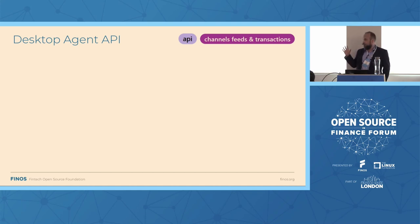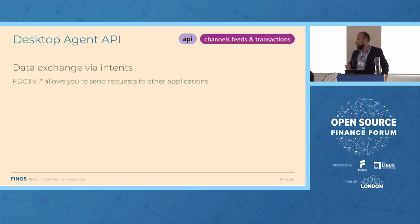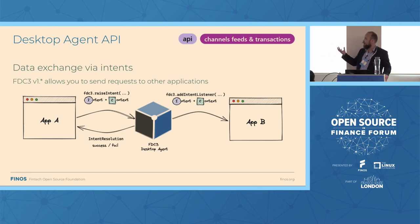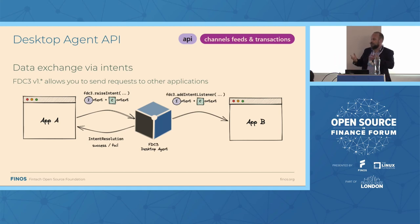Let's get on to the detail. We'll start with the desktop agent, where FDC3 from version one makes it pretty easy to send requests over to other applications to do a thing. You do it by raising an intent, which the desktop agent will resolve — it will send it on to another app. It might be that there's just one app available, or it might show up a resolver allowing the user to pick an app. Ultimately, it will deliver the intent and context over there, and at the same time send back an intent resolution to your app so you know where it went and who's dealing with it.